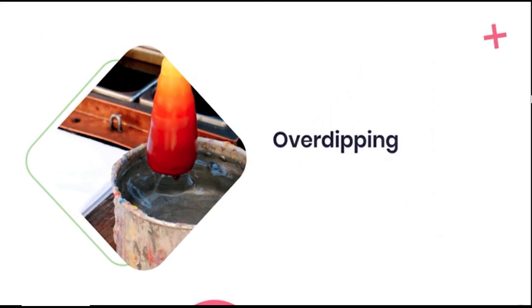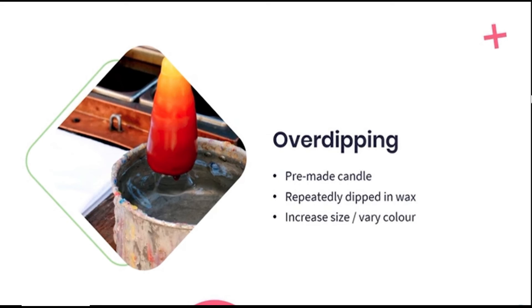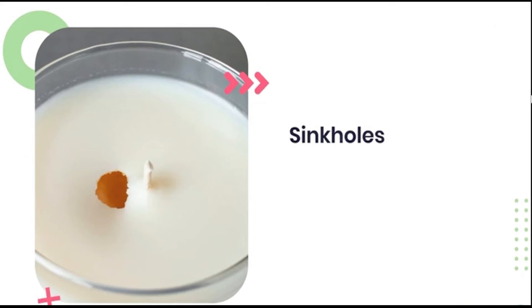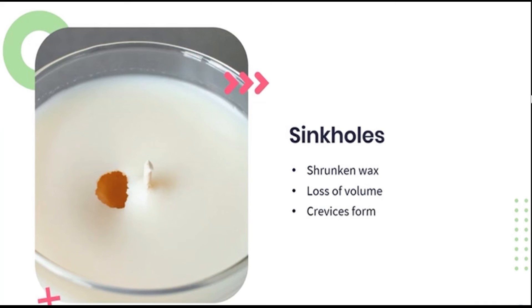Over dipping is the practice of placing a candle, generally one made in a mould, into warm wax again and again to build up layers of wax and increase the size or alter the color. The term literally refers to dipping a candle that is technically complete over and over again, thus giving it an over dip. Sinkholes are a very common sight in candles and they form when the wax has been allowed to cool and shrink. When the wax cools it always loses volume to an extent, causing deep crevices to form from the surface of the candle downwards, thereby creating a sinkhole.